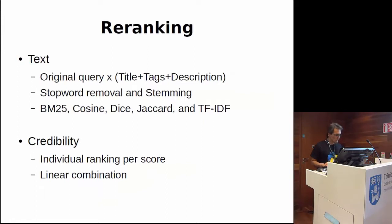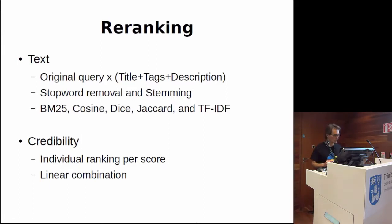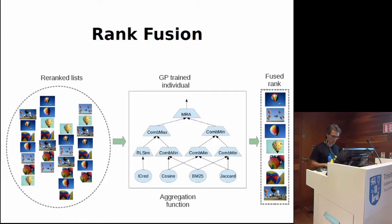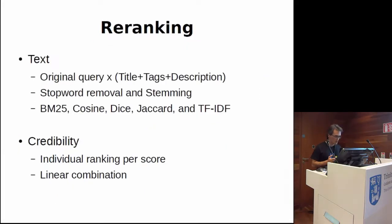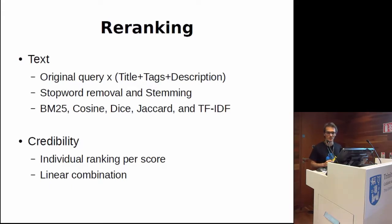For improving the regional ranking, we explore textual and credibility-based rankings. Text pre-processing — stop-word removal and stemming — were applied, and different similarity scores were evaluated. User credibility was individually used for ranking. Additionally, a ranking was created considering a linear combination, with weights empirically adjusted.